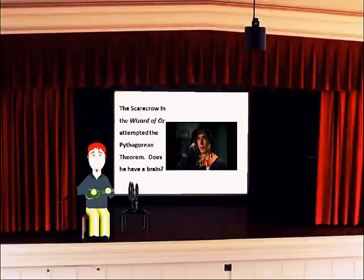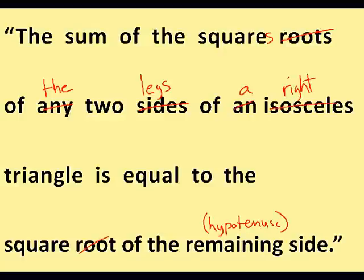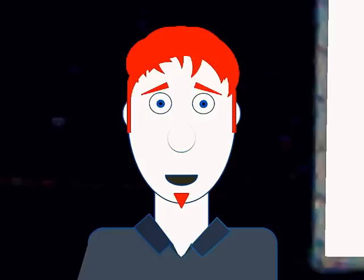A scarecrow in The Wizard of Oz attempted the Pythagorean Theorem. Does he have a brain? 'The sum of the square roots of any two sides of an isosceles triangle is equal to the square root of the remaining side.' Oh, George, I've got a brain! No, no, he doesn't.